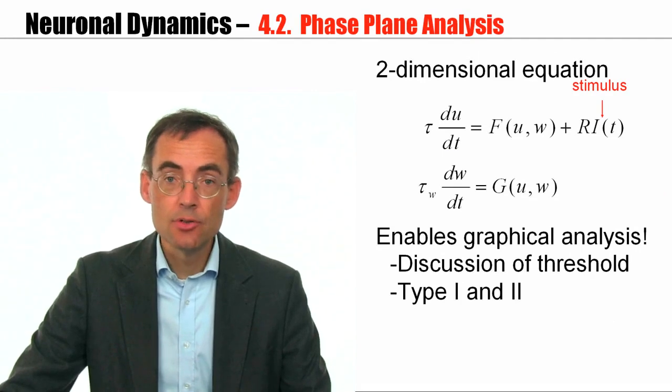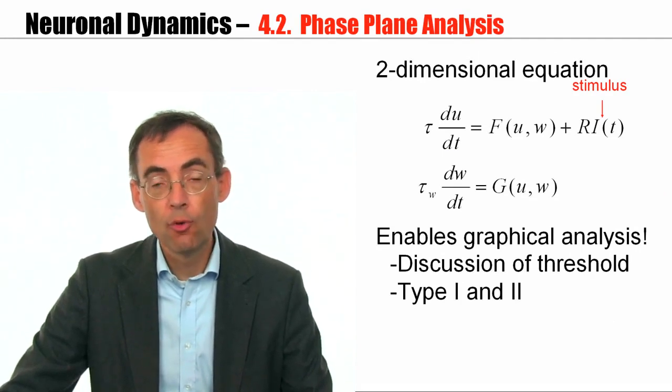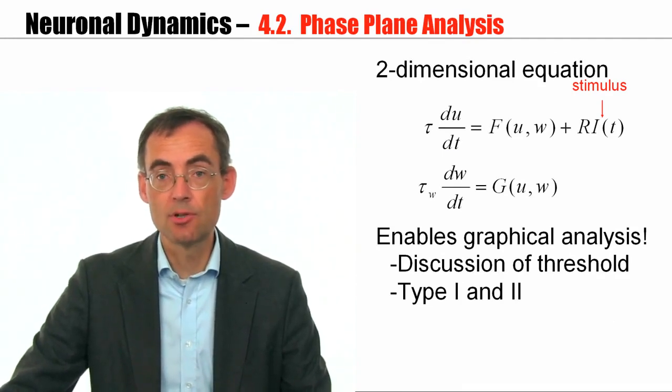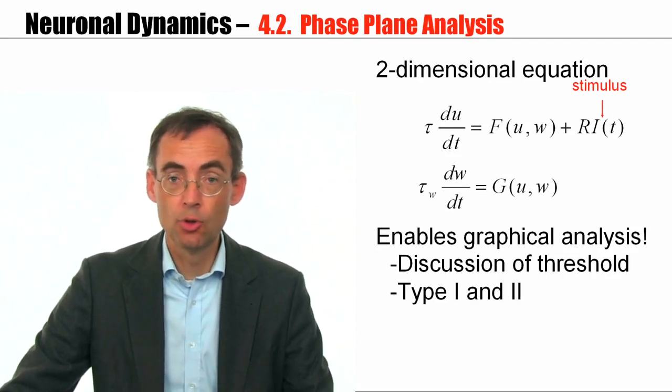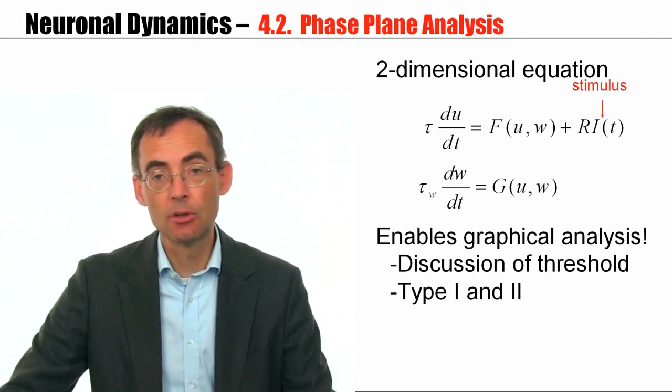We have reduced the model of Hodgkin-Huxley from four coupled differential equations to two differential equations. We are left with two variables, one for the voltage U, and the second one, an auxiliary variable called W.